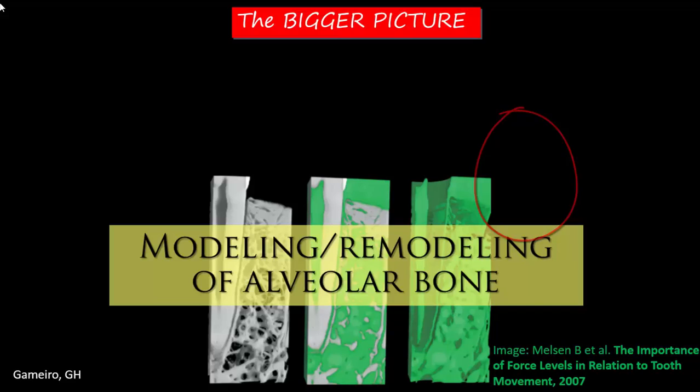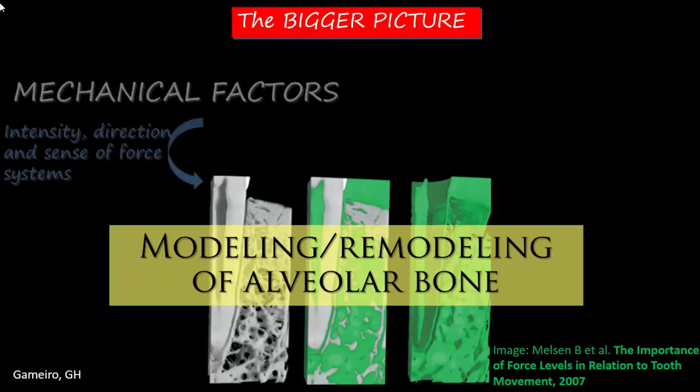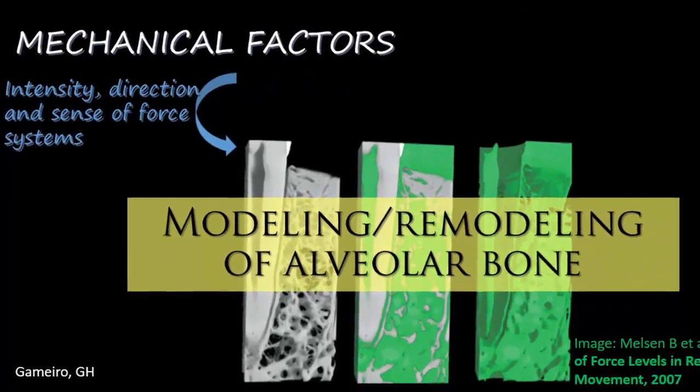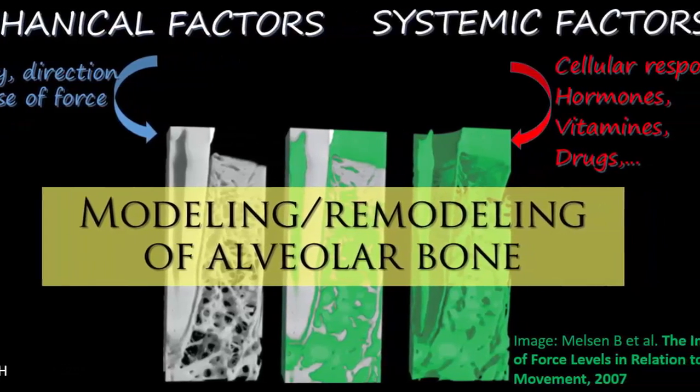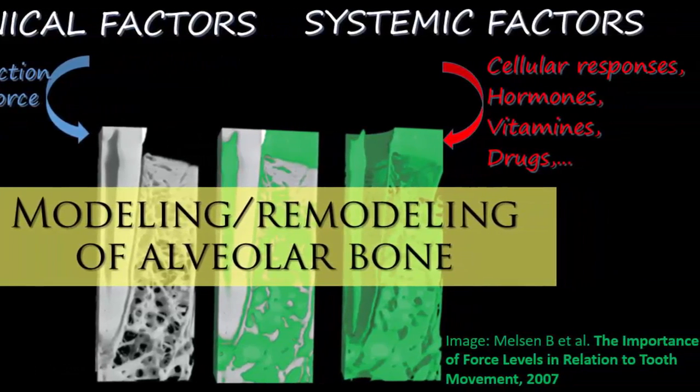In summary, when analyzing the bigger picture of orthodontic movement, the main variables capable of influencing the biological process of alveolar modeling and remodeling can be divided into mechanical factors on one side, with emphasis on intensity, direction, and sense of applied forces, and systemic factors on the other side, involving cellular responses, hormones, vitamins, drugs, among others.